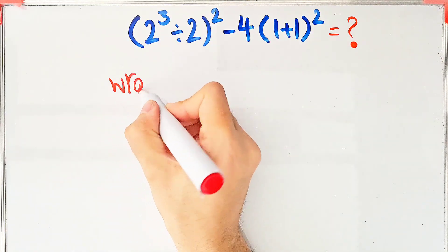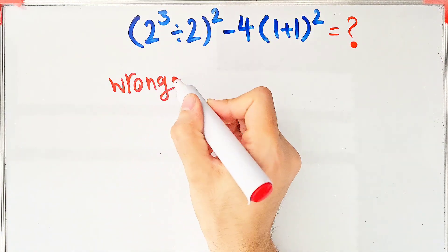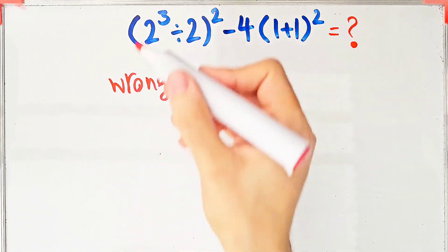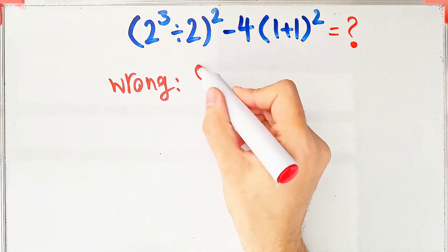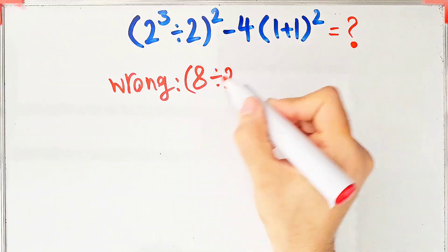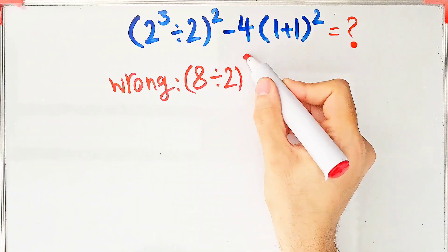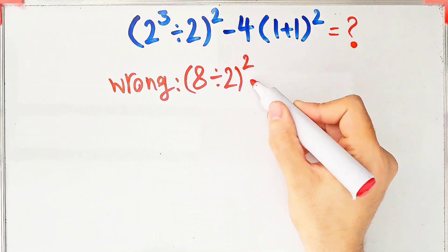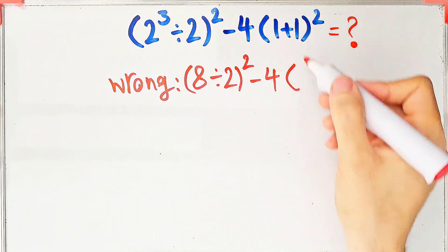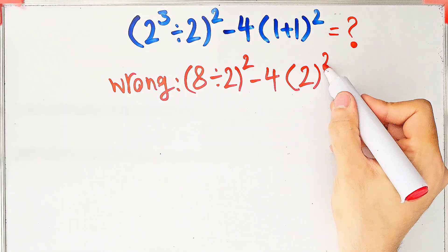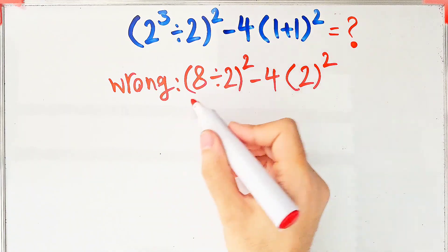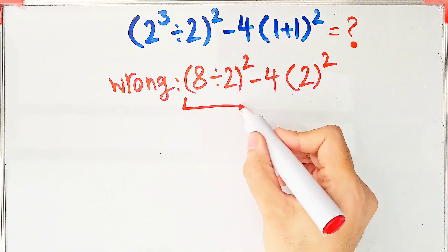The wrong way of solving these questions: some people start from the left and don't pay attention to the priority of mathematical operations. They compute eight divided by two, then all of them to the power of two, minus four, times one plus one, which equals two, then to the power of two. Eight divided by two equals four.